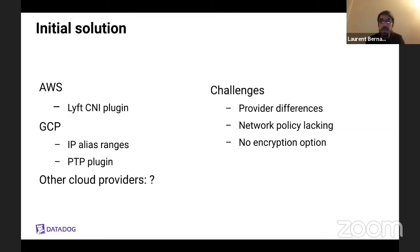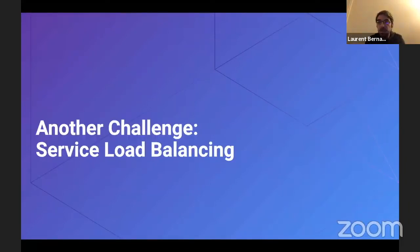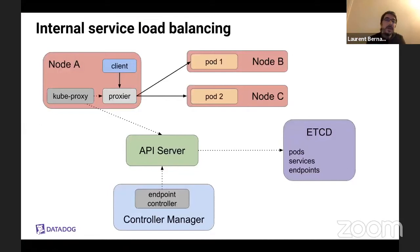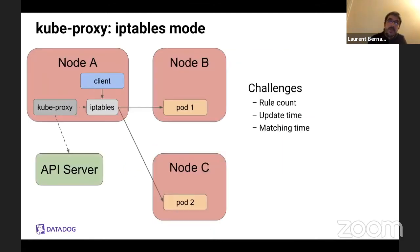An additional challenge is that we wanted security on the network side, and this solution doesn't provide it — there was no simple way to extend it to do encryption. If you run Kubernetes, you also know that you have to do service load balancing. The typical way to do that is to run kube-proxy on your nodes, which watches for endpoint changes in the cluster and configures a proxy that the client uses to send traffic to pods via a virtual IP. The default implementation is iptables, and it works completely fine. You can use iptables for filtering packets, but also to do a kind of load balancing.